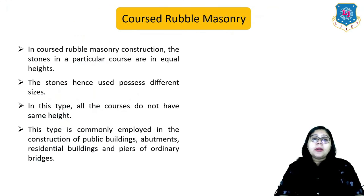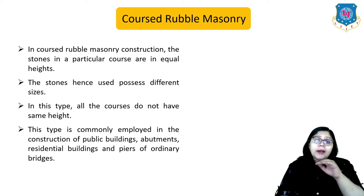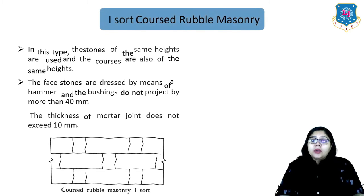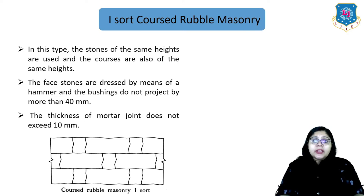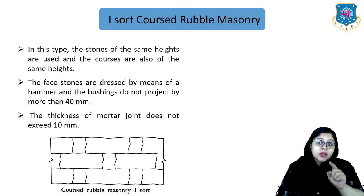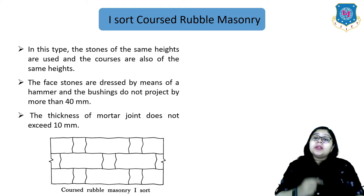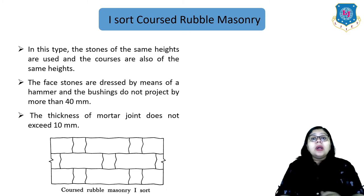In coarse rubble masonry construction, the stones in a particular course are of equal height. The stones used possess different sizes and not all courses have the same height. This type is commonly employed in the construction of public buildings, abutments, residential buildings and piers of ordinary bridges. In the one-shot course type, stones of the same height are used, courses are also of the same height, face stones are dressed by hammer, bushings do not project more than 40 mm, and the mortar joint thickness does not exceed 10 mm.